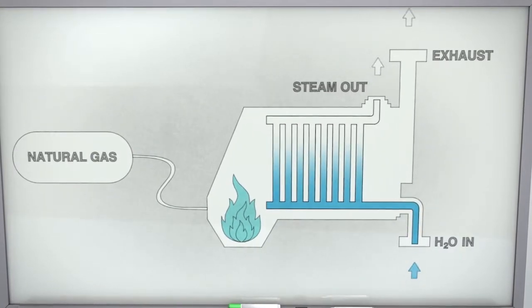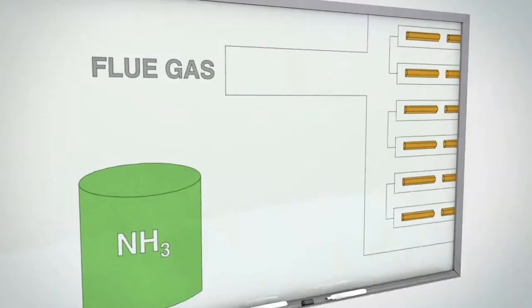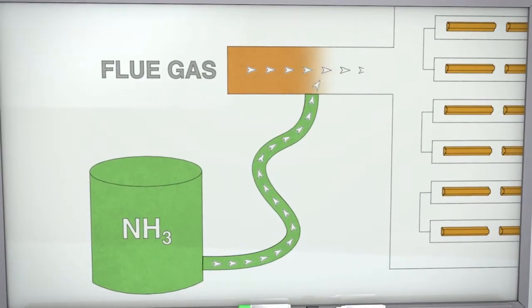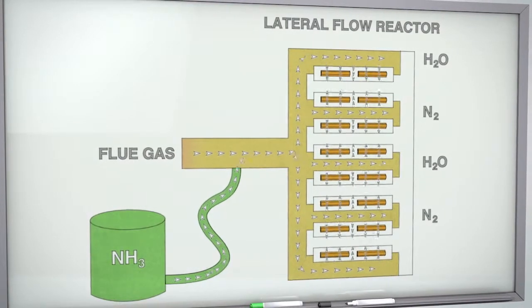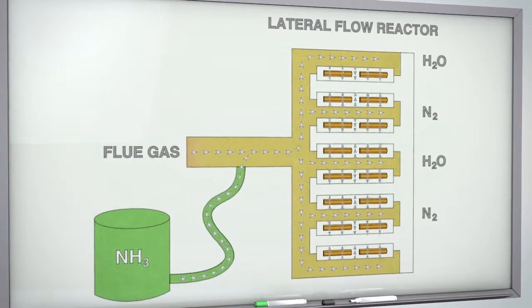In order to reduce these emissions, the Shell-DNOx system begins by injecting ammonia into the flue gas stream. The mixture then travels over a CRI high-activity catalyst located in the lateral flow reactor, or LFR.